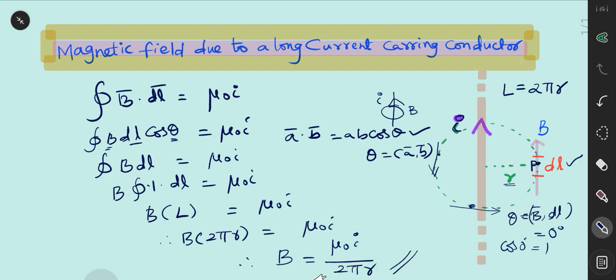This is the final expression of magnetic field due to a long current carrying conductor.